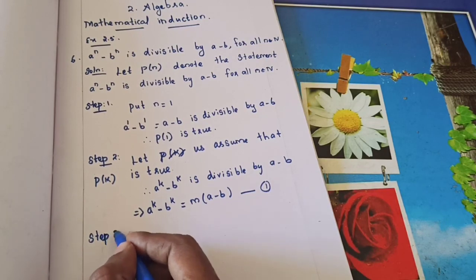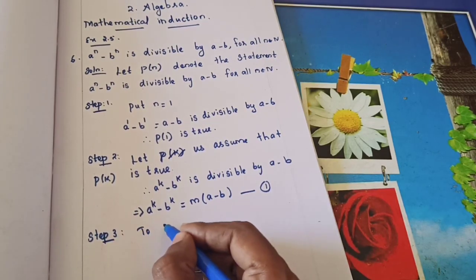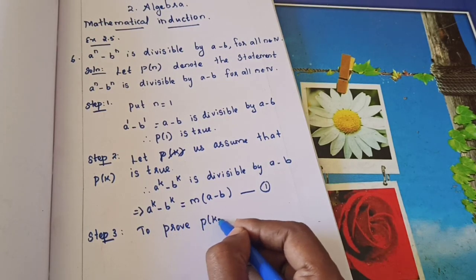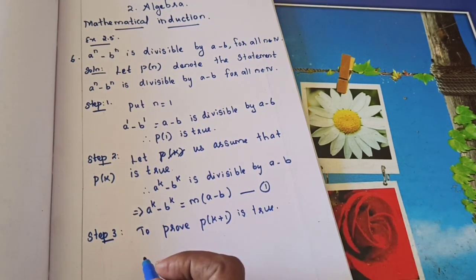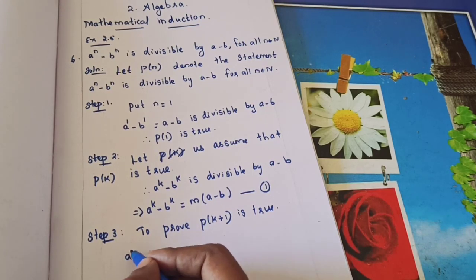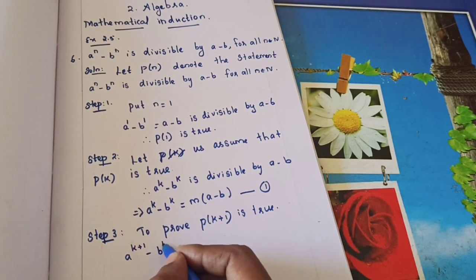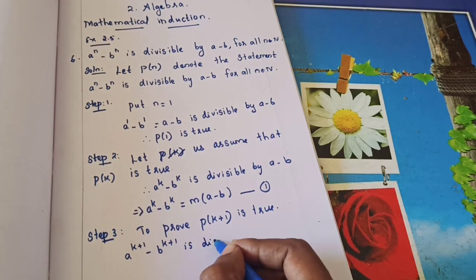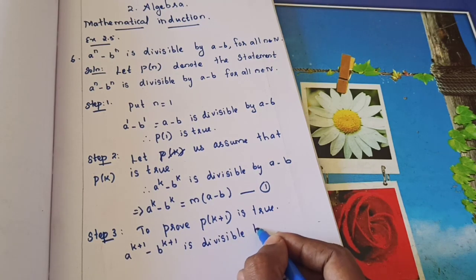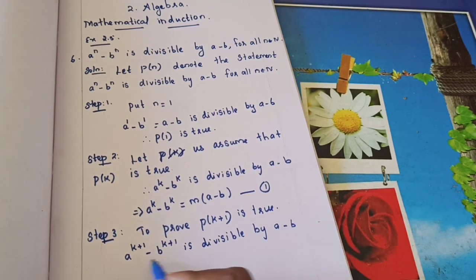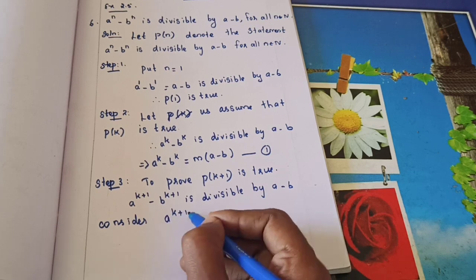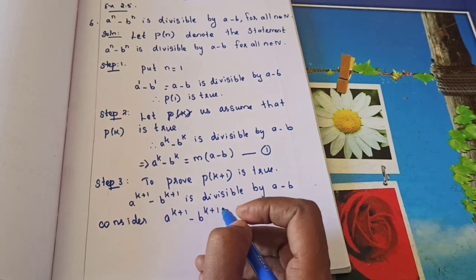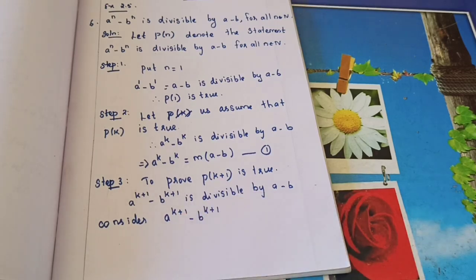Step 3: We will prove that p(k+1) is true. Substituting k+1 in place of k, we need to show that a^(k+1) minus b^(k+1) is divisible by (a minus b). Let us consider a^(k+1) minus b^(k+1) and show it is divisible by (a minus b).